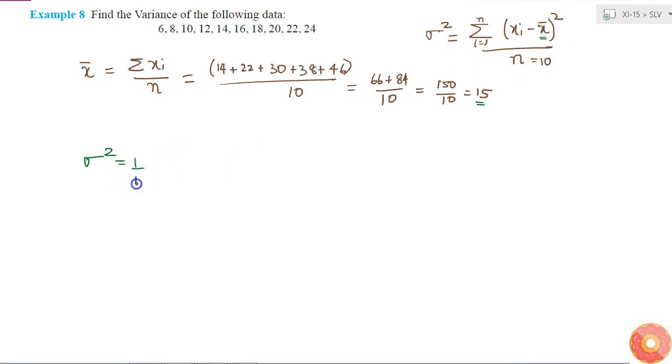So it will be 1 by 10 of (6 minus 15), that is minus 11, so minus 11 square, plus minus 7 square, plus minus 5 square, plus minus 3 square, plus minus 1 square, plus 1 square, plus 3 square, plus 5 square, plus 7 square, plus 9 square.